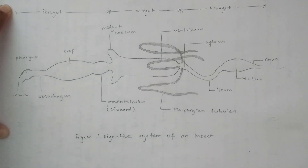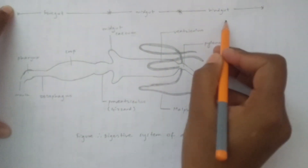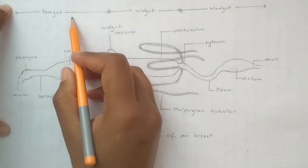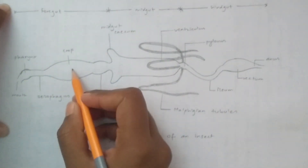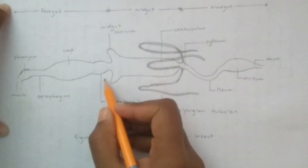We can divide the digestive system into three sections: foregut, midgut, and hindgut. In the foregut, we have mouth, pharynx, esophagus, crop, and gizzard.